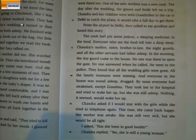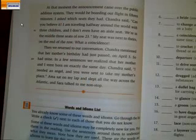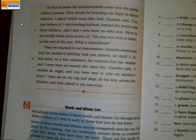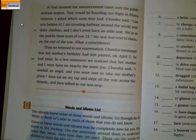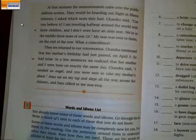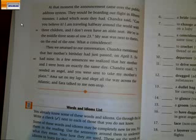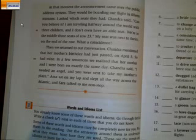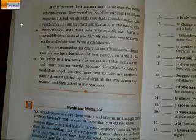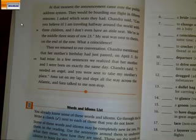Chandra asked if I would stay with the girls while she tried to telephone again. This time she came back happy — her mother was awake. She was still very sick, but she would be alright. I asked, 'Has she been in good health?' Chandra replied, 'Yes, she is still a young woman.' Then the announcement came over the public address system: they would be boarding our flight in 15 minutes. I asked which seats they had. Chandra said, 'Can you believe it? I'm traveling halfway around the world with three children and I don't even have an aisle seat — we're in the middle three seats of row 23.' My seat was next to theirs, on the end of the row. What a coincidence.